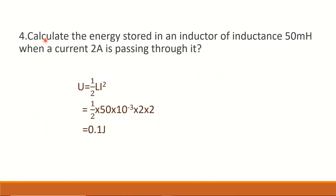Calculate the energy stored in an inductor of inductance 50 mH when a current of 2A is passing through it. The energy stored is given by U = ½LI². Substituting: U = ½ × 50 × 10⁻³ × 2 × 2. The calculation gives the answer as 0.1 joule.